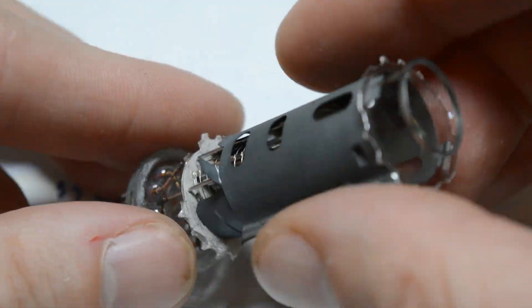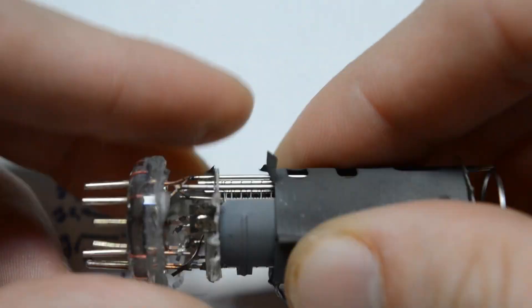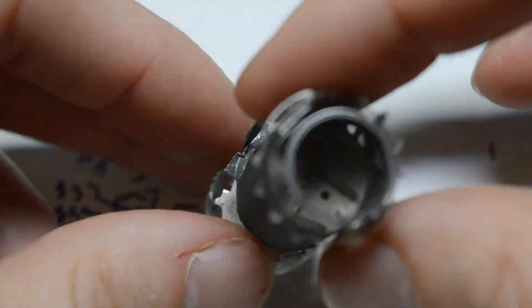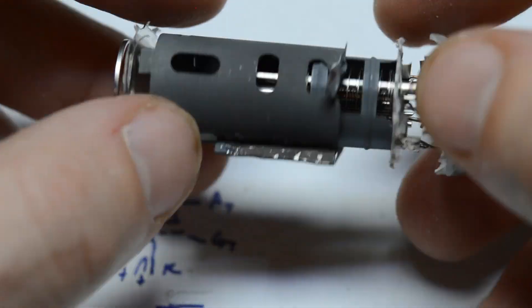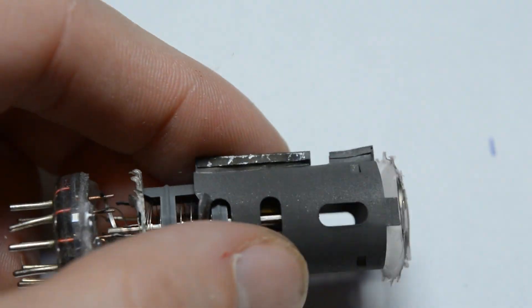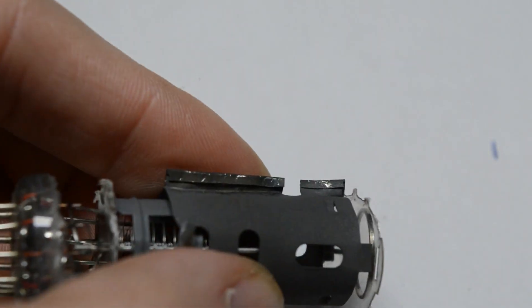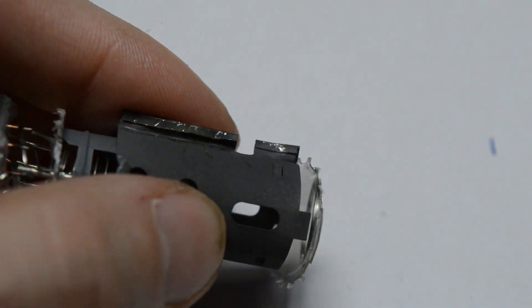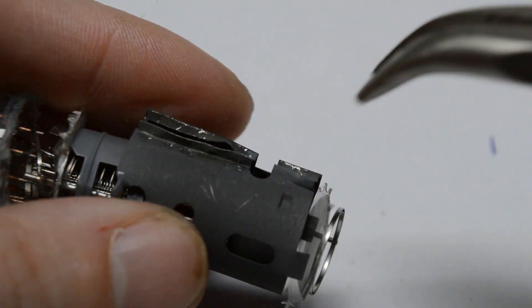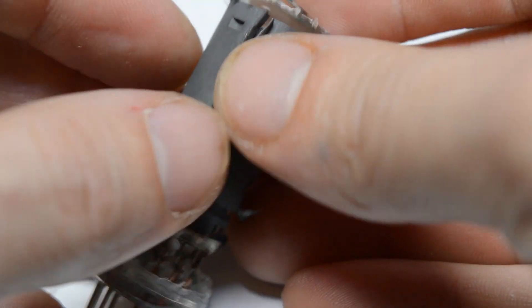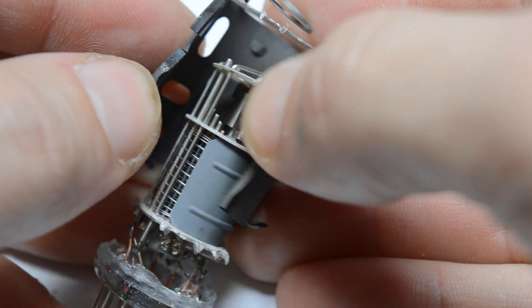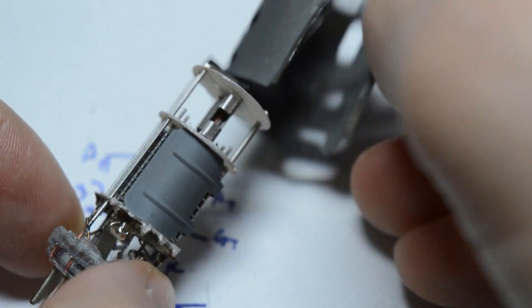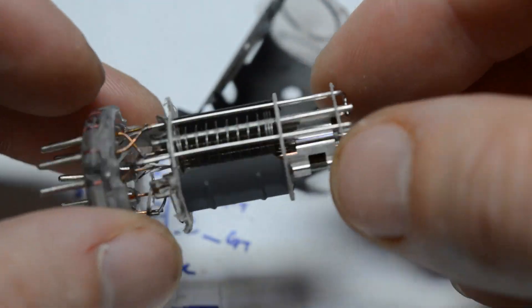Now it shouldn't be snagging anymore. Come on. Still snagging somewhere. Why doesn't it want to come off? Well, I guess we'll have to open this in the end. I thought we might get away without this, but we won't. Okay, there we go. And now it should finally come off. There we have it.